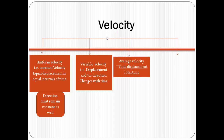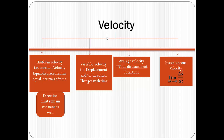Third is average velocity — it is calculated as total displacement upon total time taken. The final one is instantaneous velocity, calculated as limit delta T tends to 0 of delta S upon delta T. We calculate instantaneous velocity when we are interested in magnitude and direction at a given instant of time.